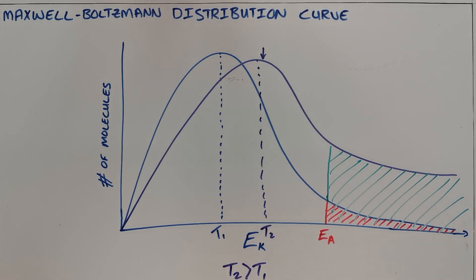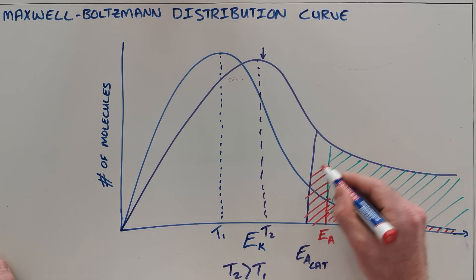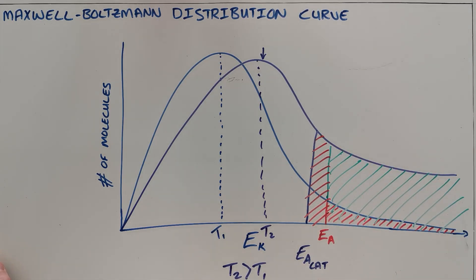The second way in which we can increase the number of particles that can take part is by using a catalyst. We know that a catalyst lowers the required activation energy. It does that by providing a different path, and what that then does is it opens up the path for more molecules to take part in that reaction.